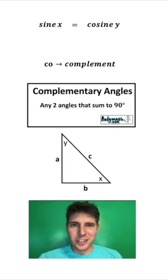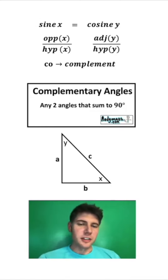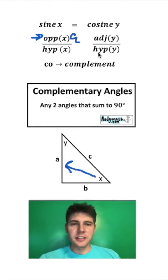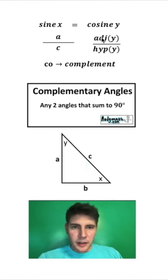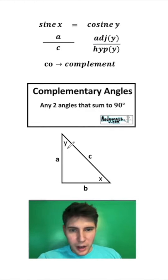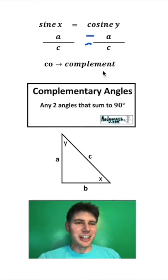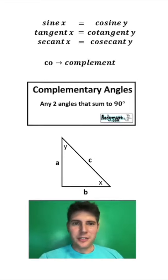Let's verify this. Sine is opposite over hypotenuse, and cosine is adjacent over hypotenuse. Sine of x uses the opposite of x over the hypotenuse, and cosine of y uses the adjacent of y over the hypotenuse. The opposite of x is side a, and the hypotenuse is c, giving us a over c. For cosine of y: the adjacent side to y is also a, and the hypotenuse is c, giving us a over c. So a over c equals a over c — sine of x must equal cosine of y. This is true for the other relationships as well: tangent of x equals cotangent of y, and secant of x equals cosecant of y. That is what the 'co' means for trig functions.